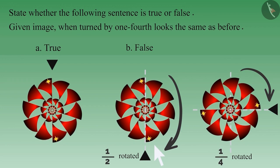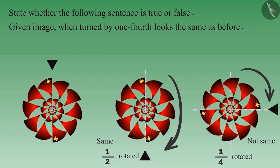When rotated by half, it looks the same, but it doesn't look the same when rotated by one-fourth. Therefore, it is not necessary that if an image looks like its original self when rotated by half, then it would look the same when rotated by a quarter. Therefore, this statement is false.